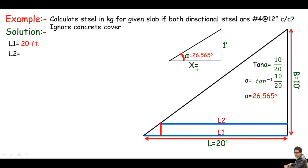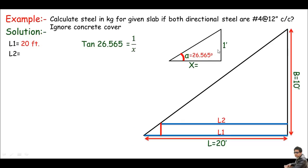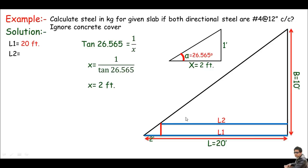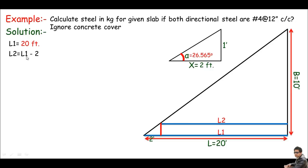Now I can find x using tangent of alpha again. tan(alpha) = perpendicular / base, where perpendicular is 1 foot and base is x. Rearranging: x = 1 / tan(alpha). Calculating this gives x equals 2 feet. So this increment is 2 feet. Subtracting this from L1: L2 = L1 − 2 = 20 − 2 = 18 feet.